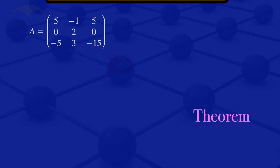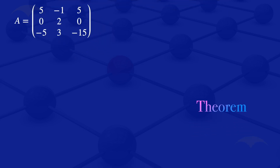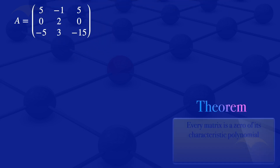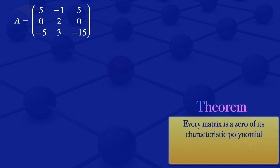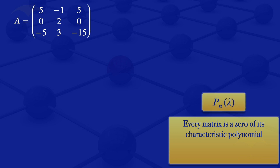The Cayley-Hamilton theorem states that every matrix is a zero of its characteristic polynomial. We denote the characteristic polynomial by P_n of lambda. So what the Cayley-Hamilton theorem is saying is P_n of A equals 0, where this 0 is the zero matrix.